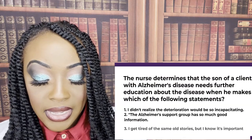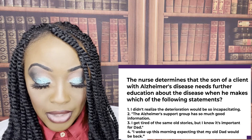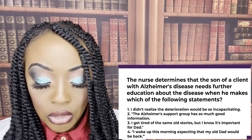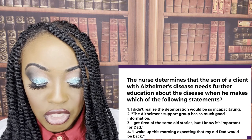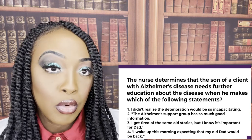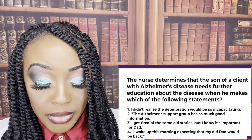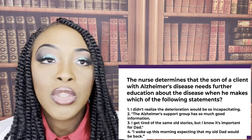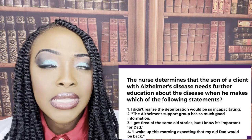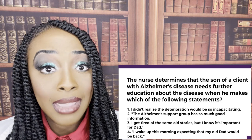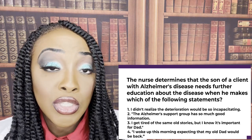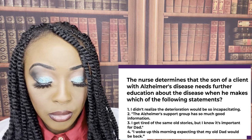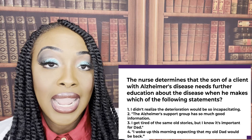Seventh question. The nurse determines that the son of a client with Alzheimer's disease needs further education when he makes which statement? One, 'I didn't realize the deterioration would be so incapacitating'; two, 'The Alzheimer's support group has so much good information'; three, 'I get tired of the same old stories, but I know it's important for dad'; four, 'I woke up this morning expecting my old dad would be back.' The correct answer is four — there's no turning back with this disease. Alzheimer's is progressive and has no cure. Choices one, two, and three all show the son understands the disorder.